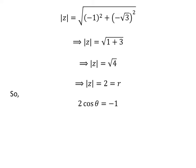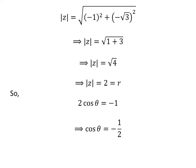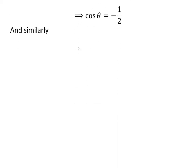Since r times cosine of theta is equal to minus 1, we have 2 times cosine of theta equal to minus 1. Dividing by 2 gives cosine of theta equal to minus half. Similarly, we get sine of theta equal to minus square root of 3 upon 2.